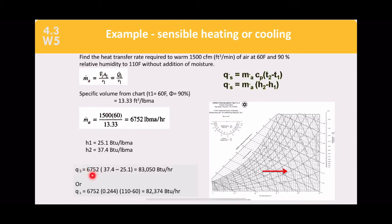Q_s = 6752 × (T2 - T1), or using Q_s = 6752 × 0.244 × (110 - 60), depending on which equation you use. This is a sensible heating case, so the answer is positive. Look closely at this slide and let me know in this week's meeting if you notice something that seems incorrect — I won't point it out, but see if you can find it.